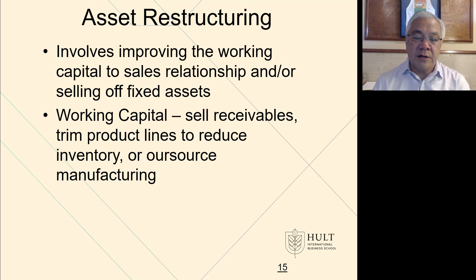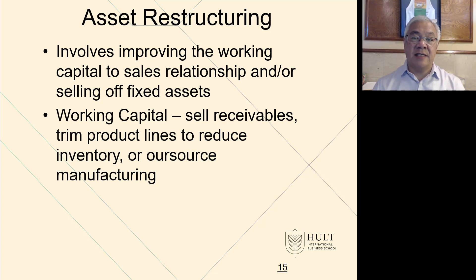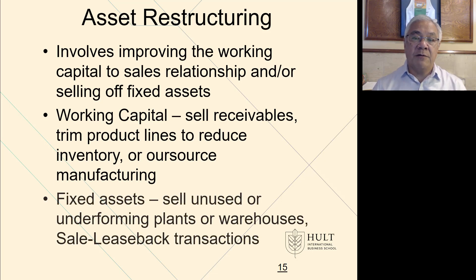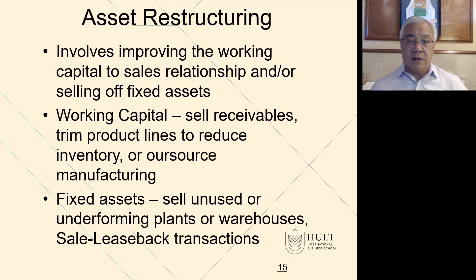Asset restructuring addresses working capital and fixed assets. For working capital, we can sell receivables, trim our product line to reduce inventory requirements, or outsource manufacturing to eliminate the need to hold raw materials, work-in-process, and finished goods — buying from outside at perhaps a slightly higher unit cost but avoiding inventory and factory overhead. For fixed assets, we can sell unused or underperforming plants or warehouses, or do a sale-leaseback to generate cash in exchange for future payments.